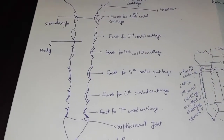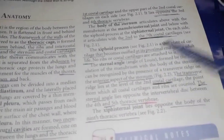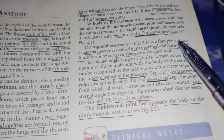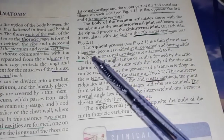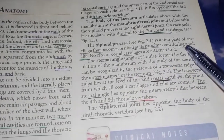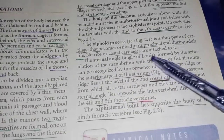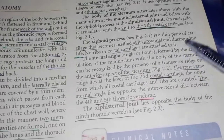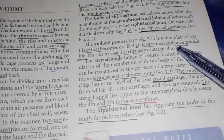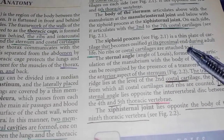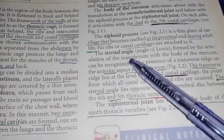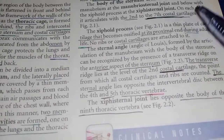Now let's talk about the xiphoid process. The xiphoid process is a thin plate of cartilage that becomes ossified at its proximal end during adult life. No ribs or costal cartilages are attached to it.